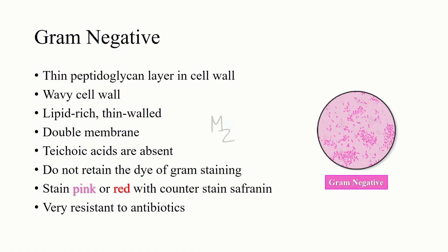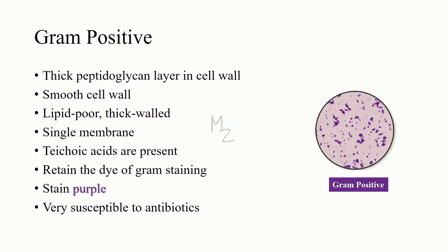Gram negative bacteria have a thin peptidoglycan layer in their cell walls. The cell wall of gram negative bacteria is wavy, meaning it has curves — it's not smooth or straight like gram positive bacteria. Gram negative bacteria are lipid-rich, thin-walled bacteria with a double membrane: one outer membrane and one inner cytoplasmic membrane. They have no teichoic acids present. These bacteria do not retain the dye of gram staining; instead, they stain with the counter stain safranin, either pink or red. The pink ones in the picture are the gram negative bacteria.